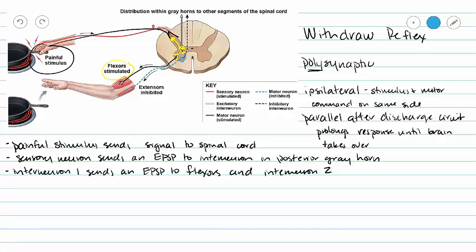Interneuron 2 then sends an EPSP to our extensors. By sending an EPSP to our extensors, we do not allow our extensors to function.